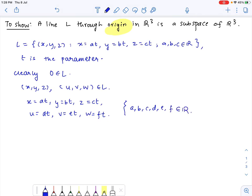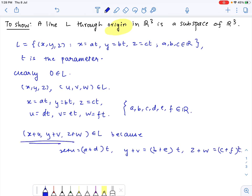So we have (x+u, y+v, z+w) belonging to L because x plus u would be (a+d) times t, y plus v would be (b+e) times t and z plus w would be (c+f) times t. So this belongs to L.